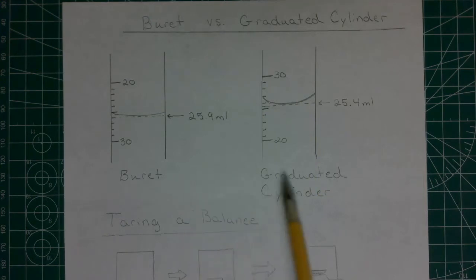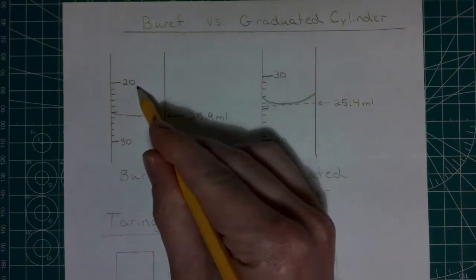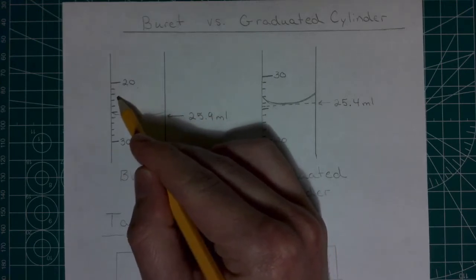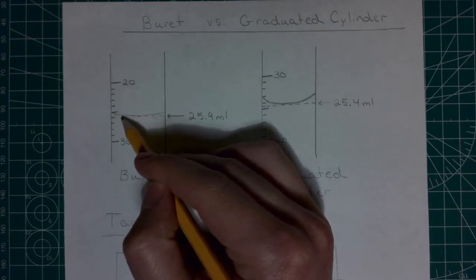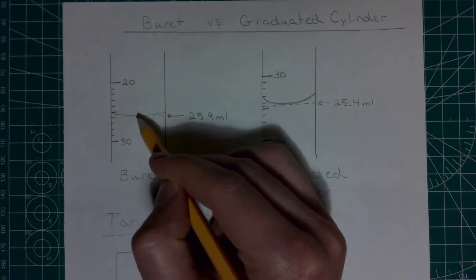In both cases, what you're going to want to do is start with the lower value. So if we have 20 up here, we're going to go 20, 21, 22, 23, 24, 25.